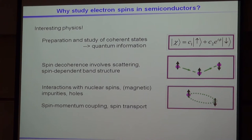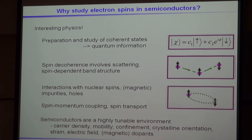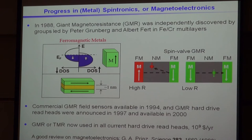I'll also talk about spin-momentum coupling and spin transport. We do measurements where we apply electric fields to samples, and we see how spins behave under the application of these electric fields. Semiconductors are also a highly tunable environment, so we can change all sorts of different variables — including carrier density, mobility, confinement, strain, and applied electric fields, or the density of dopants — and see how they affect the electron spins.